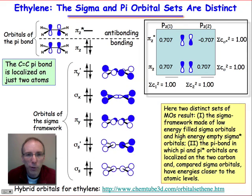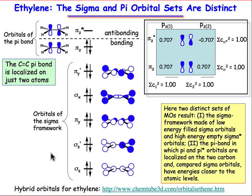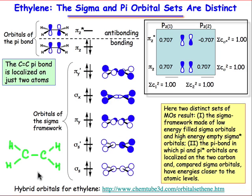The LCAO picture of ethylene is shown here, and it teaches us a very important point: the σ framework can be separated in a molecular orbital sense from the π framework. The bottom 5 molecular orbitals are σ molecular orbitals, generated in a way very similar to what we saw for ethane. Each of those 5 orbitals is occupied, and you can see from this picture that there are indeed 5 σ bonds.